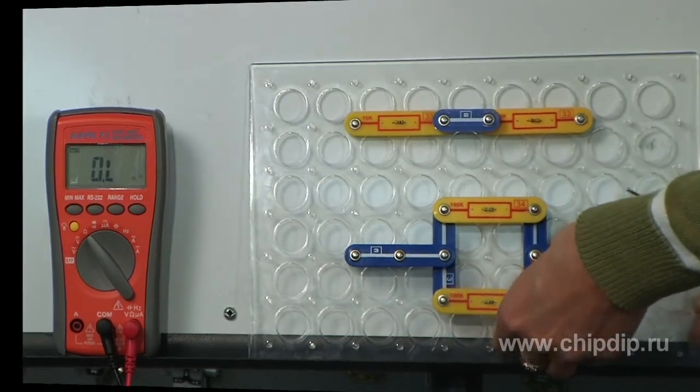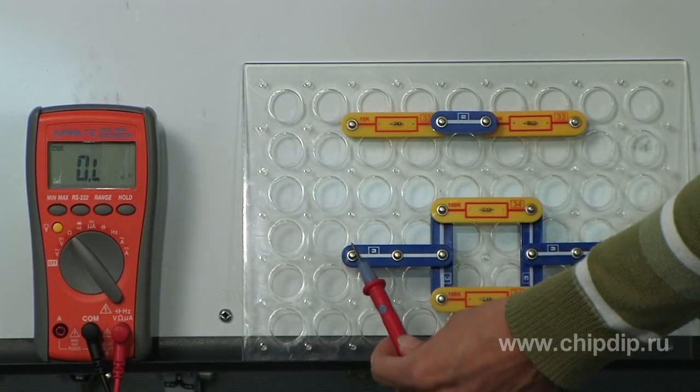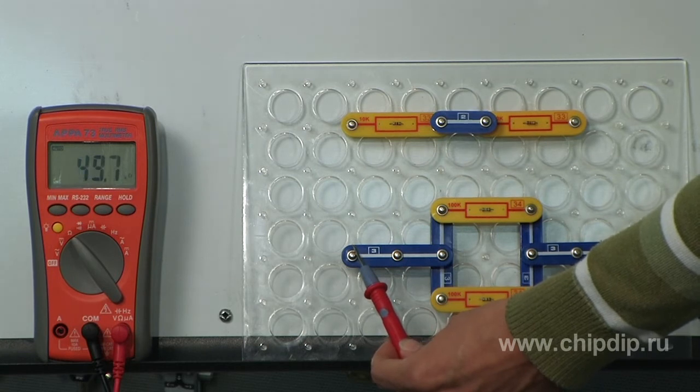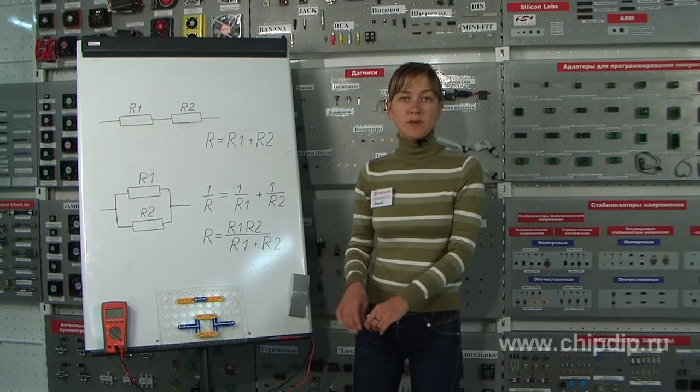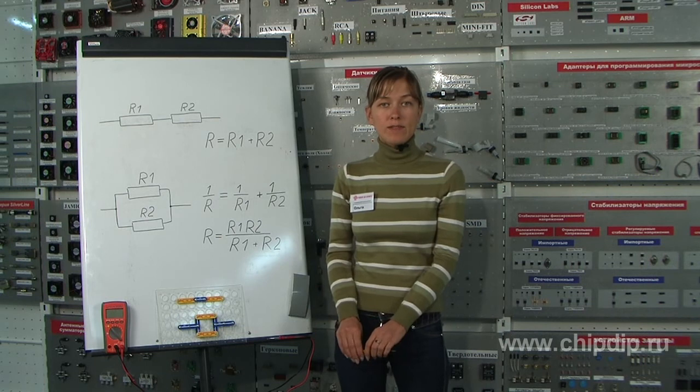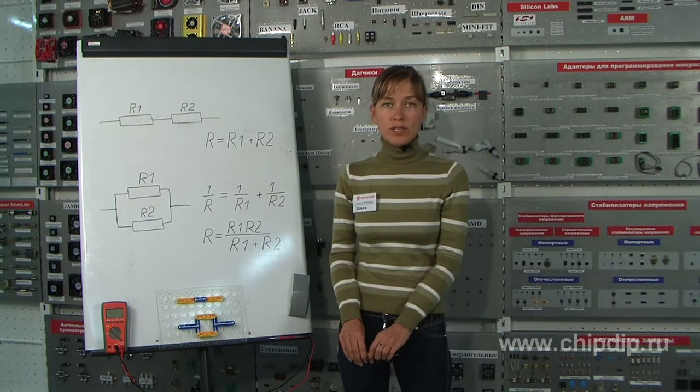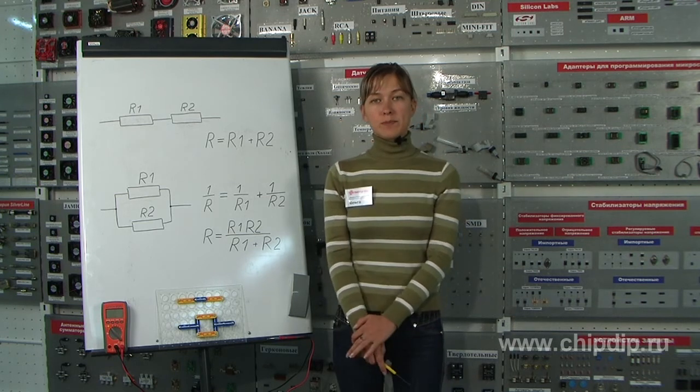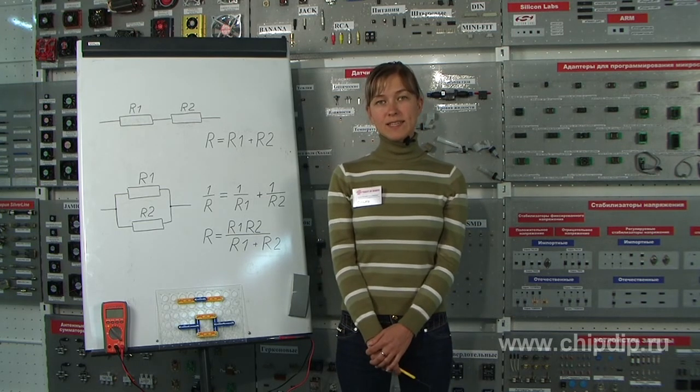we will obtain total resistance that would be two times lower, that is 50 kOhms. When the resistors are connected in parallel, the voltage on all of them is the same, whereas the current is distributed along the parallel branches inversely to the resistance values.